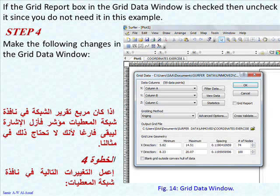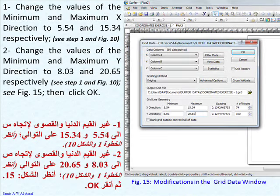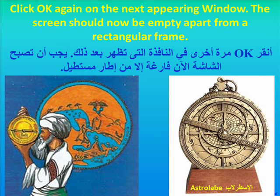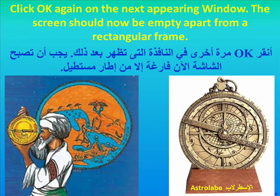Step 4: Make the following changes in the Grid Data window. First, change the values of the minimum and maximum X direction to 5.54 and 15.34, respectively. Second, change the values of the minimum and maximum Y direction to 8.03 and 20.65, respectively, see Figure 15. Then click OK. Click OK again on the next appearing window. The screen should now be empty apart from a rectangular frame. Step 5: Click the Map tab on the title bar, then New, then Contour Map. An Open Grid window will appear as in Figure 16. Click the Coordinates Exercise 1 Grid file, then click Open. A contour map will appear as in Figure 17.